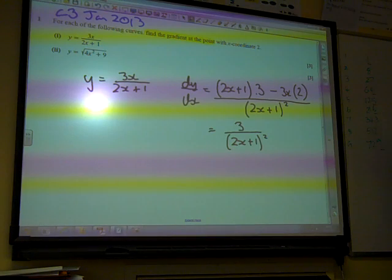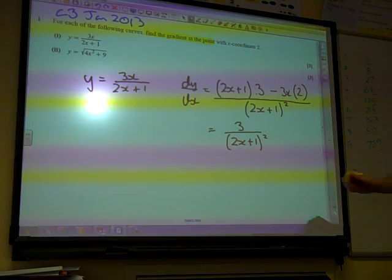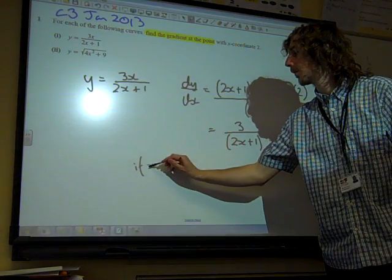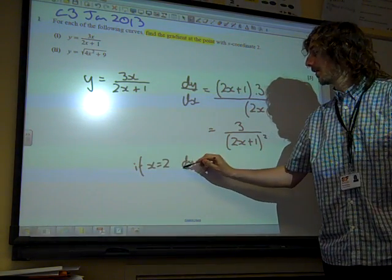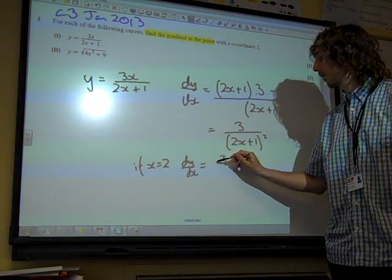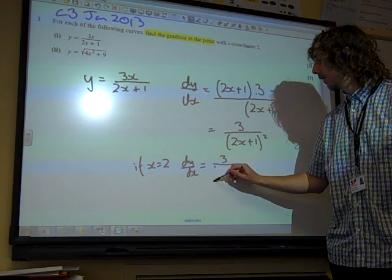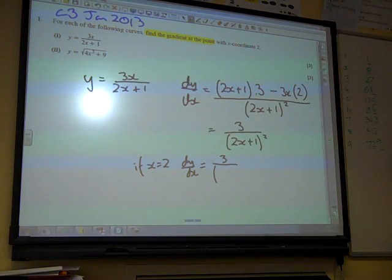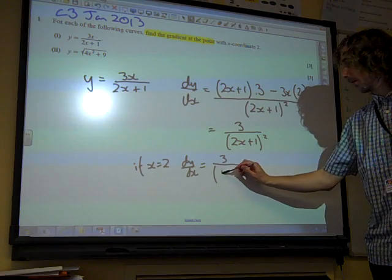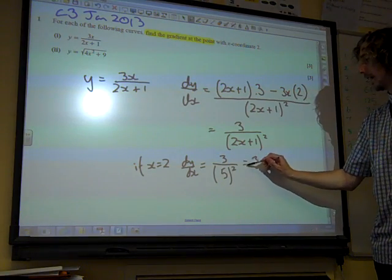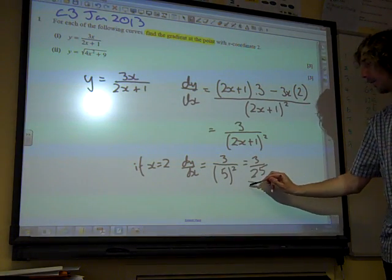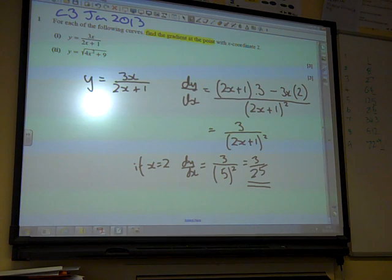What does the question want? The gradient at the point with x-coordinate 2. So, if x equals 2, dy by dx is 3 over 2 times 2 is 4 plus 1 is 5, so it's 3 over 25. And we're left with that, which is a great start.